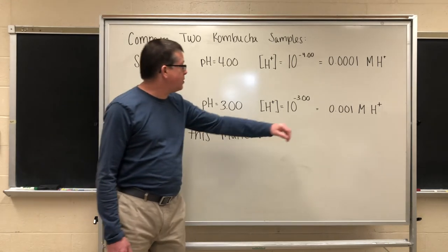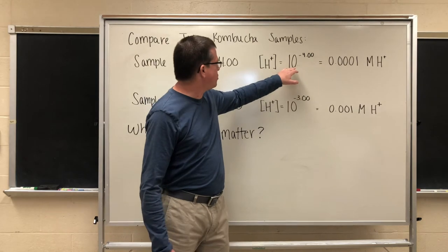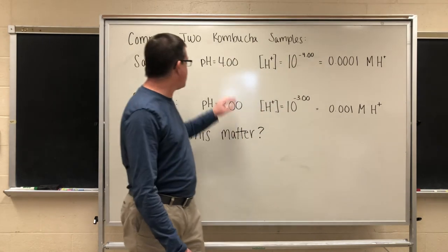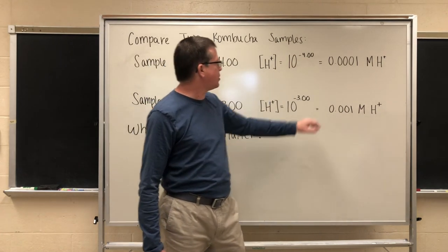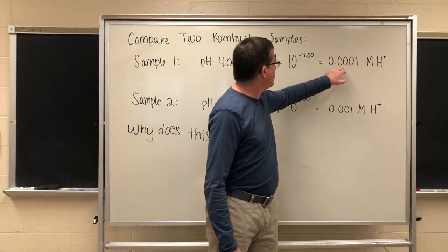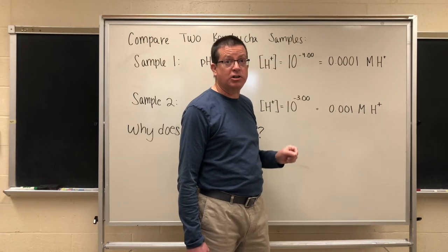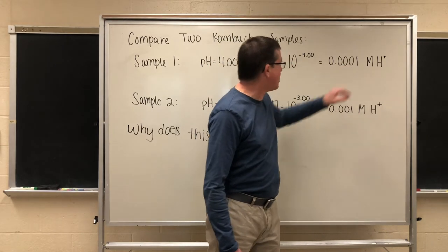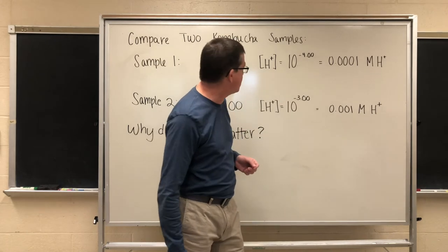We know how to do this. The molar concentration of hydrogen ion is equal to 10 raised to the minus pH power. So if I have a pH of 4 that's 10 to the minus fourth power which turns out to be 0.0001 or 10 to the minus fourth molar concentration in hydrogen ion. That's a fairly low concentration but it's typical of what we would find in kombucha.